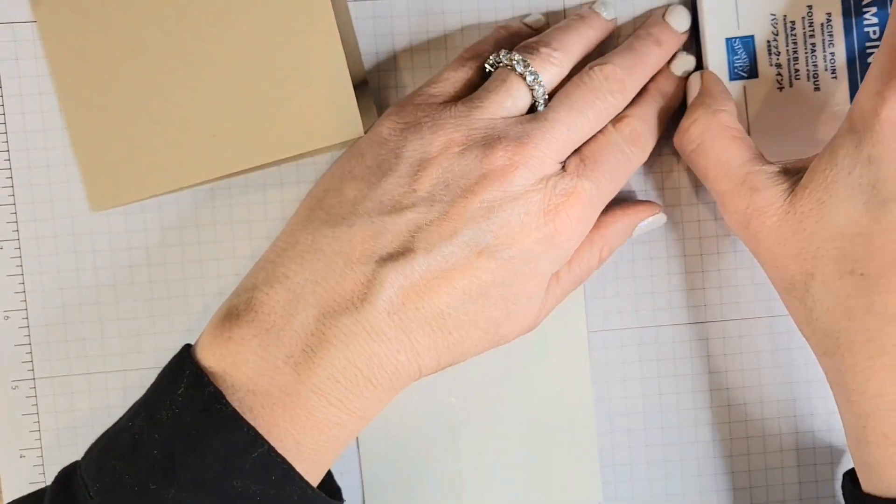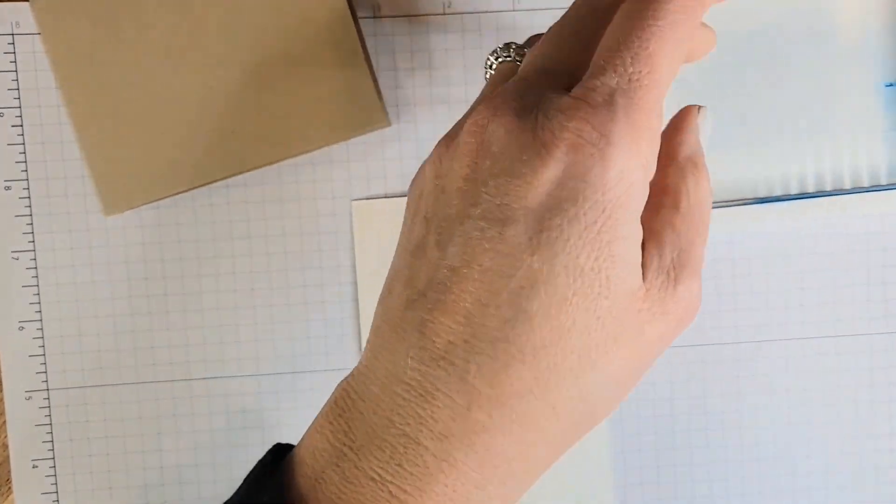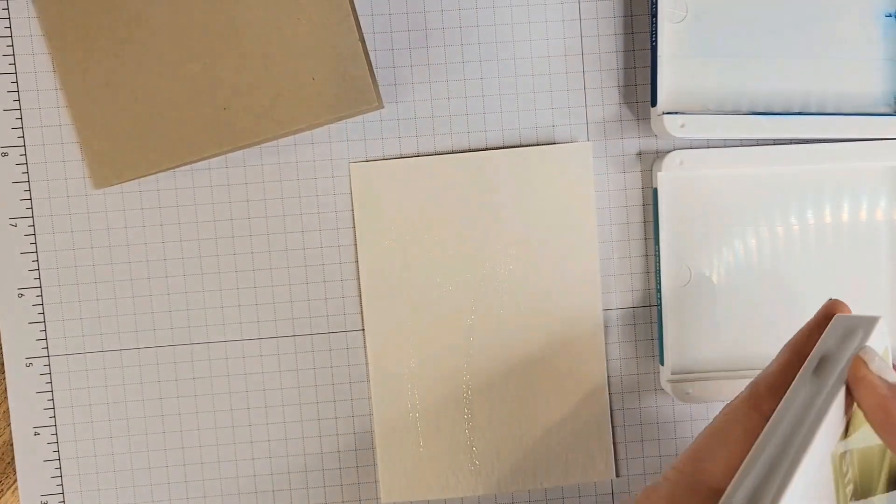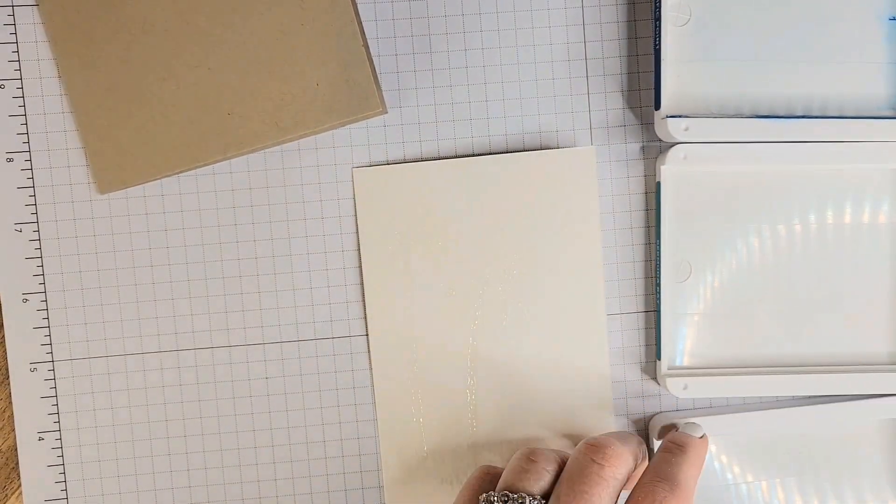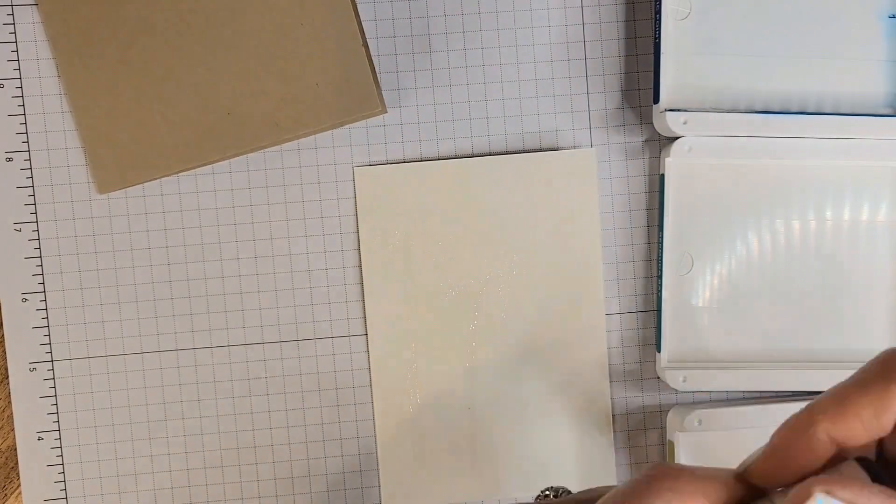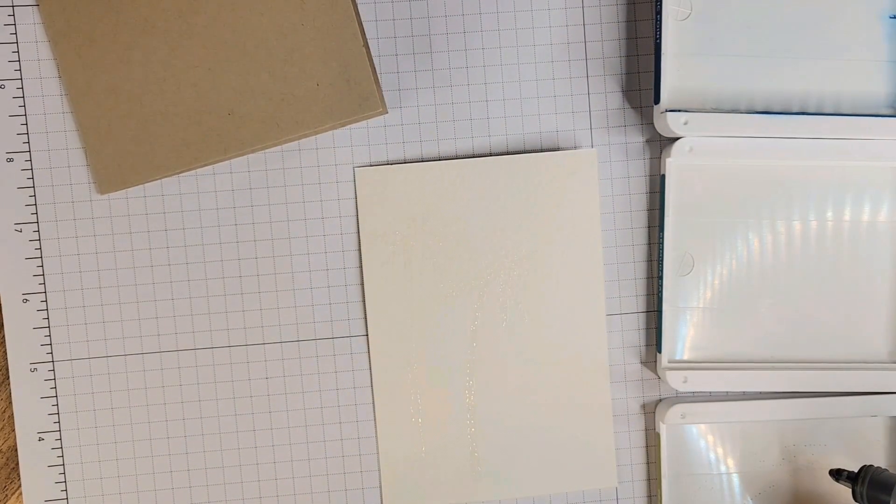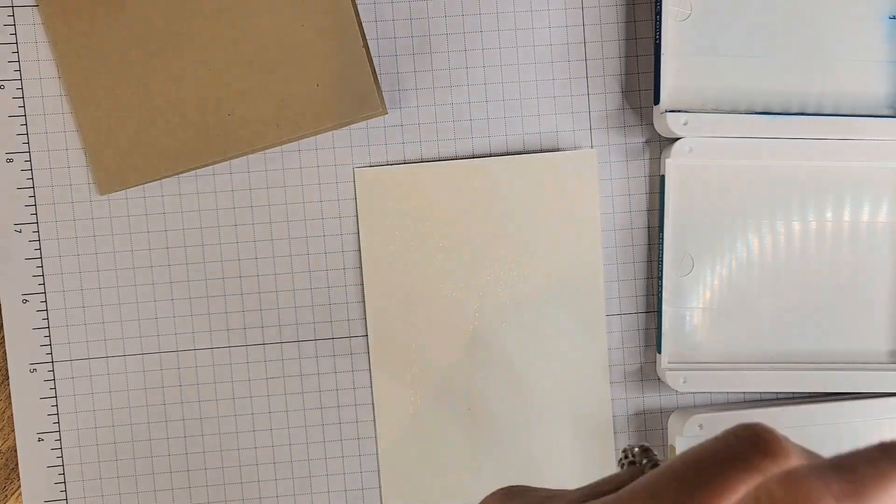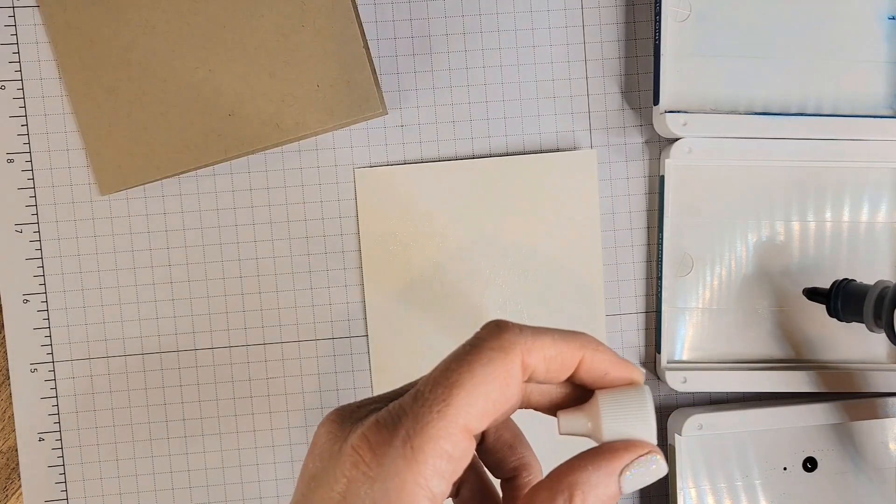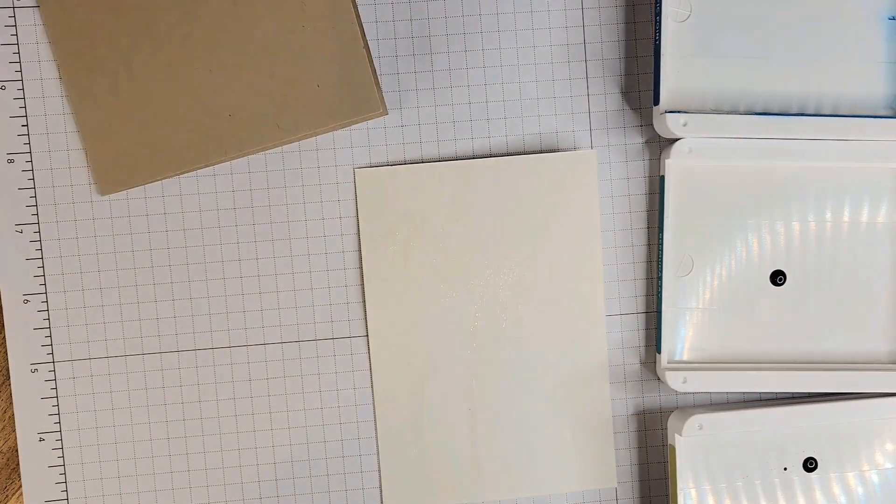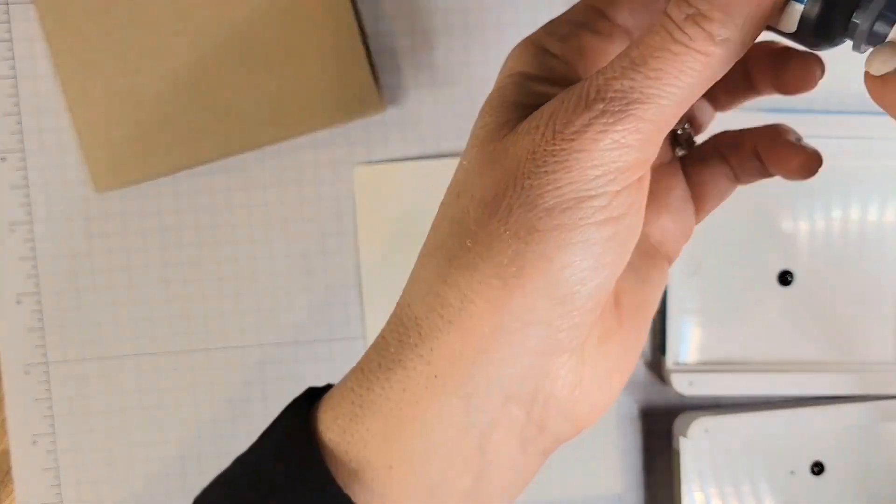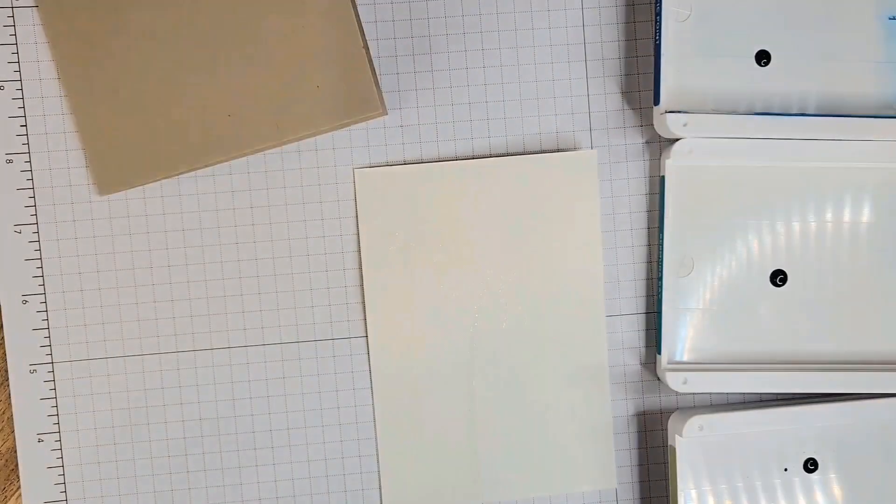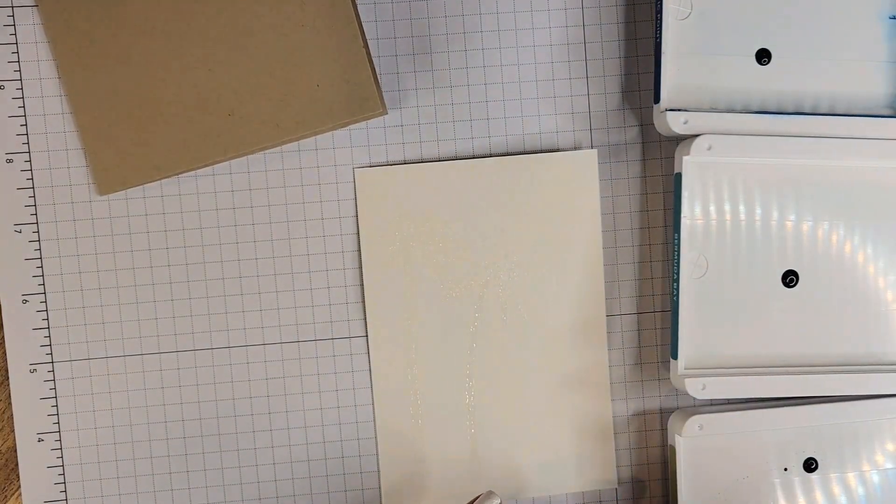So I'm going to use Pacific Point, Bermuda Bay, and Pear Pizzazz. These colors look so nice together. And so I'll just add a drop of ink refill for each one. And then they'll need a little bit of water to blend and blend in with that amazing, vibrant color. I'll just drip a little bit of water into these.